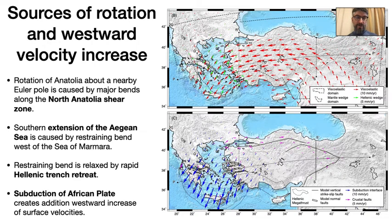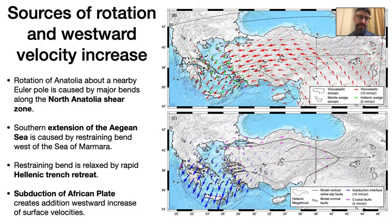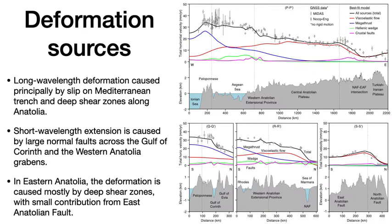However, the model does not distinguish whether slab rollback and associated trench retreat actively pulls the Aegean southward, or whether the rotation of Anatolia forces the rollback from the north. The contribution of various source mechanisms to the total deformation field is illustrated along several north-south and east-west profiles.